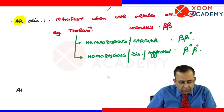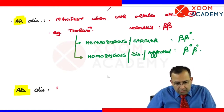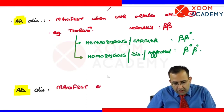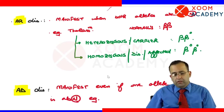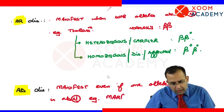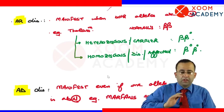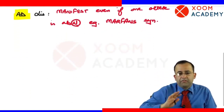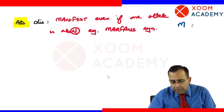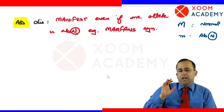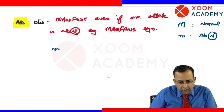In Autosomal dominant disorders, the disease manifests even if only one allele is abnormal. The example of an autosomal dominant disease is Marfan syndrome. Let us assume capital M is normal whereas small m is abnormal.